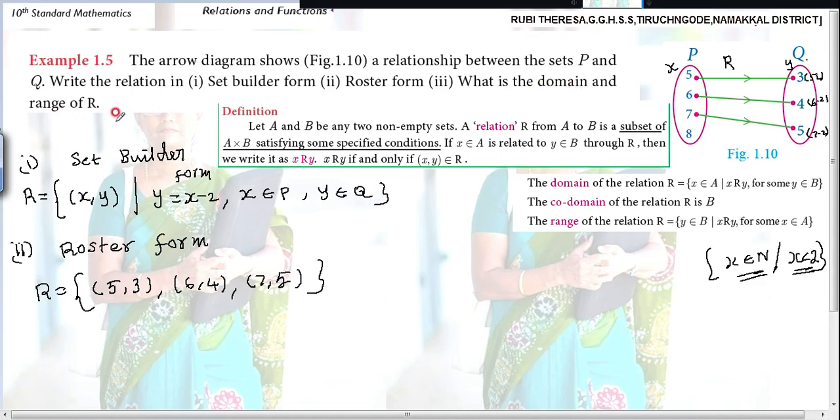Next, what is the domain and range of R? Domain - how they have defined the domain? X is an element of A, here X is an element of P. But what is the condition? X related to Y for some Y belongs to B, so there should be an image. For some Y is an element of Q.